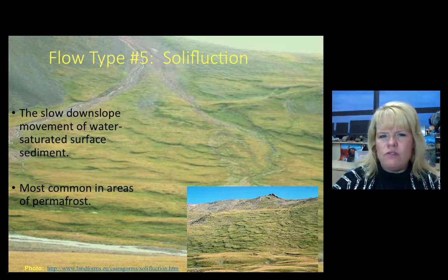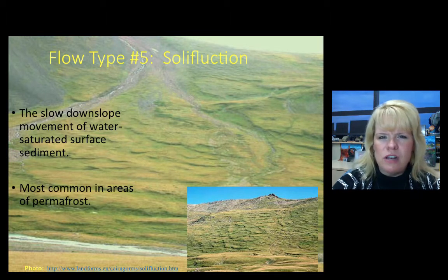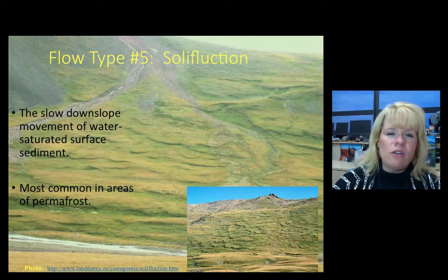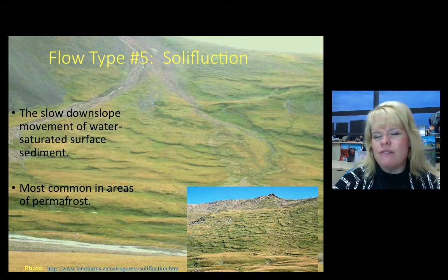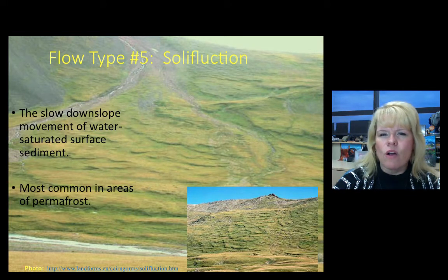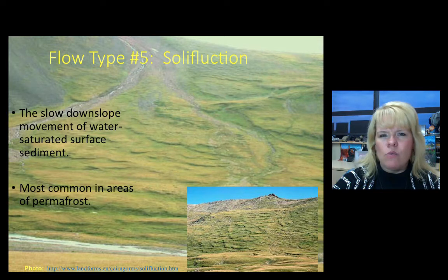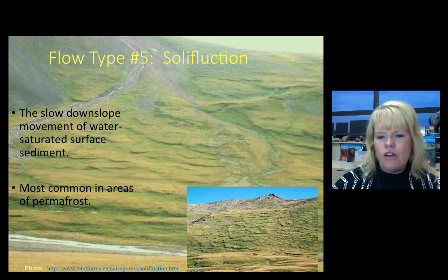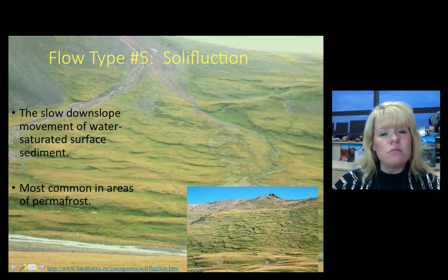Another type of mass wasting flow is called solifluction, and solifluction must occur in a permafrost region — note that for a test question. Permafrost really limits that from happening in central Texas, but you could definitely see solifluction in Alaska, Iceland, or anywhere on a mountain where there's permafrost. It looks a lot like dozens of earth flows, very similar in appearance, but it's driven by the melting of permafrost.